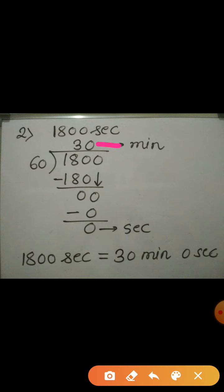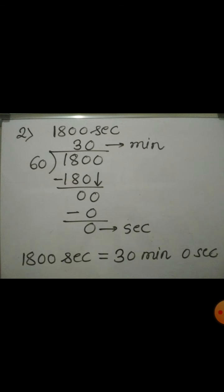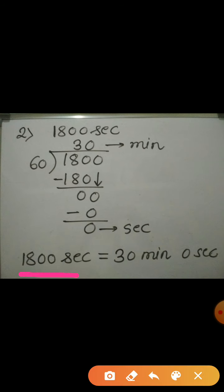Here, the quotient is 30 which we consider as a number of minutes. Remainder is 0 which is seconds. Hence, 1800 seconds is equal to 30 minutes 0 seconds. 30 minutes 0 seconds is same as 30 minutes.